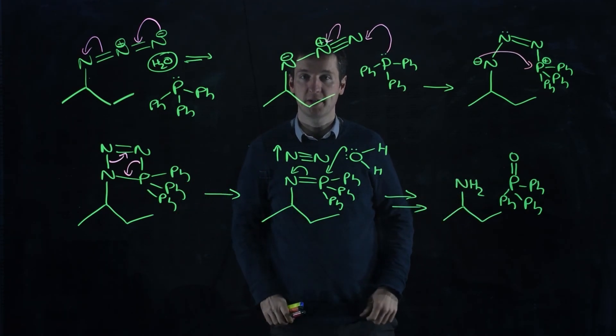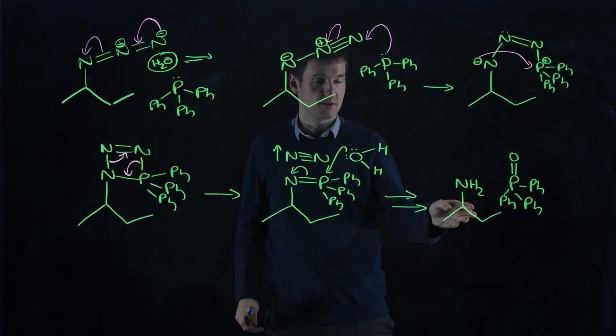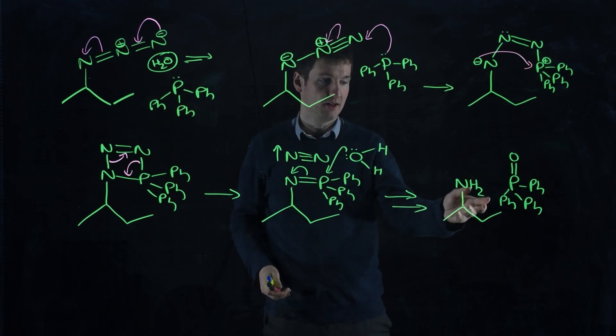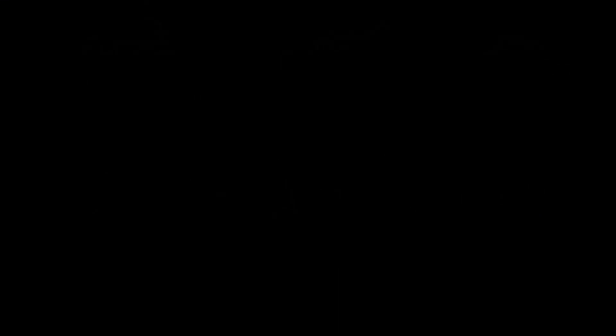Okay, that's all for now. That's enough for me. Hope that helps. Azide to primary amine, Staudinger reduction, triphenylphosphine plus water will give you your primary amine back. All right, that's all for now. Bye.